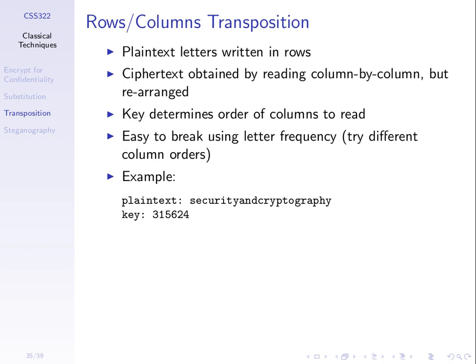Then we finished with an example of rows-columns transposition, where again we write our plain text in rows, and then the key determines which columns we read first to get our cipher text. We write 'security and cryptography' in a set of rows, and then the key is a set of integers. The second column is read first because the one is in the second position of the key, the fifth column is read second, and we read column by column to get our cipher text.